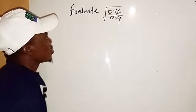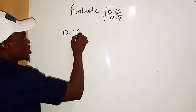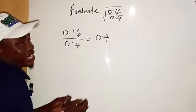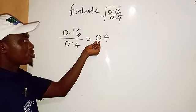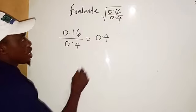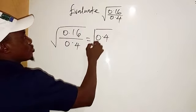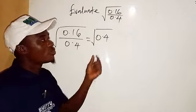You can see that we have 16 over 4. Therefore, 0.16 divided by 0.4 will give us 0.4. When you have 16 divided by 4, you get 4, then put the decimal point there. Now don't forget that we have the square root, so we reduce this to the square root of 0.4.